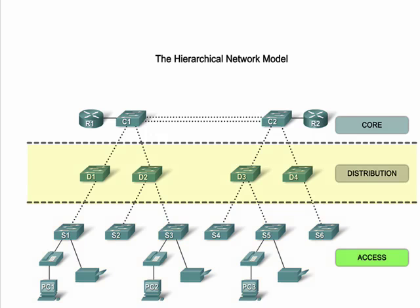The distribution layer serves as a consolidation point for access layer switches. When multiple IDFs are located throughout a building, uplinks from each of those switches terminate at a distribution layer switch. The distribution layer is responsible for policy enforcement and inter-VLAN routing. Finally, the core layer acts as the consolidation point for distribution layer devices and a high-speed redundant network backbone. An example of a network core is the equipment that ties together multiple distribution layer switches in a multi-building campus.